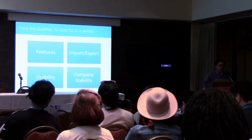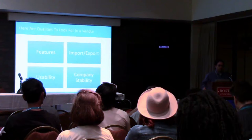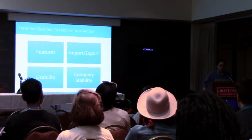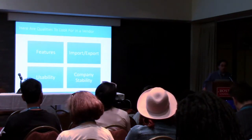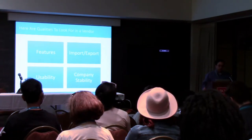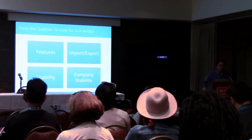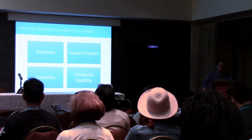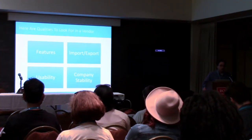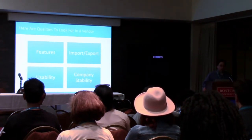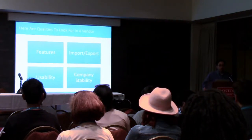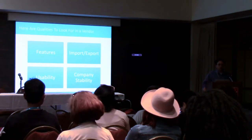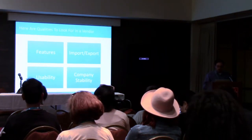Usability was another factor. We found a lot of these systems hadn't been updated visually in a long time — they looked like they were from the 90s, or it wasn't clear where to go to do something. Making sure you can understand how to use it matters. We also wanted to make sure the company is stable and will be in the marketplace for a long time, because it's so difficult to switch vendors. One thing we looked at was whether they work with Zapier or other systems, so that if one component failed to keep pace with technology, we could swap it out.